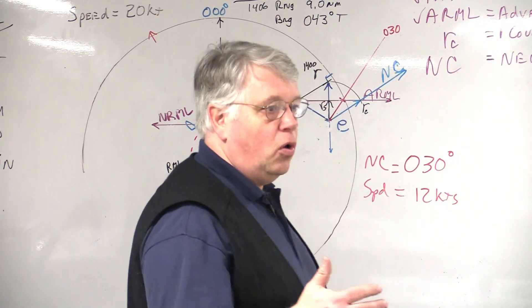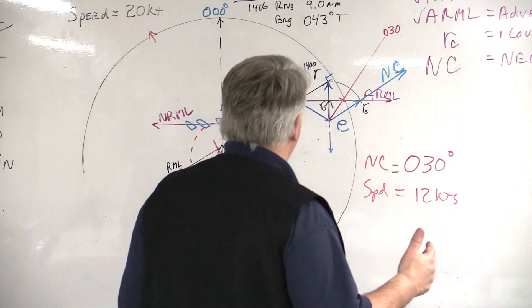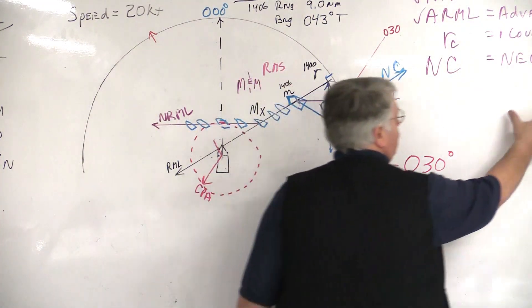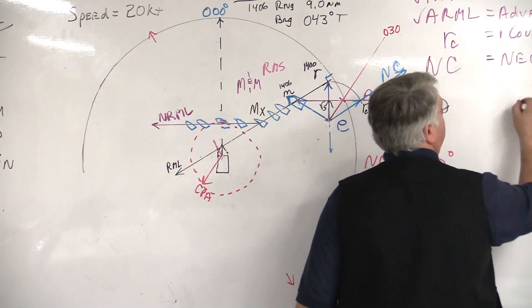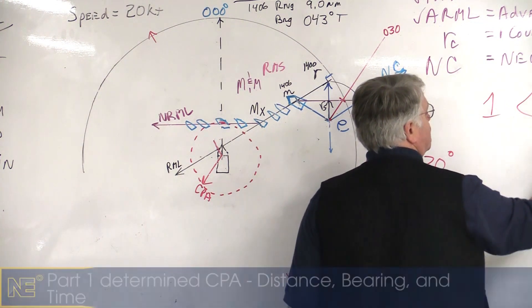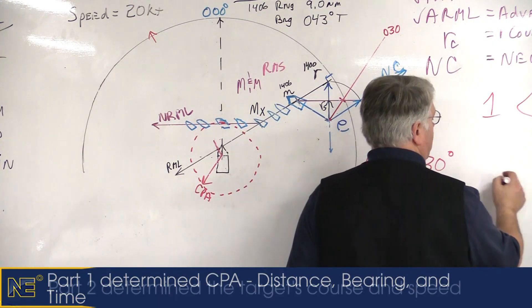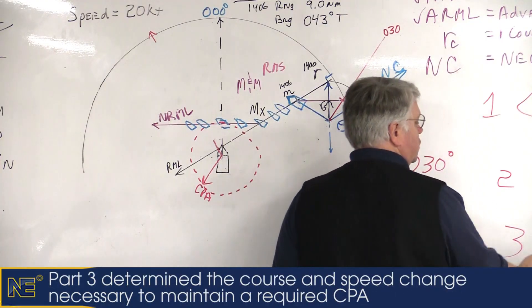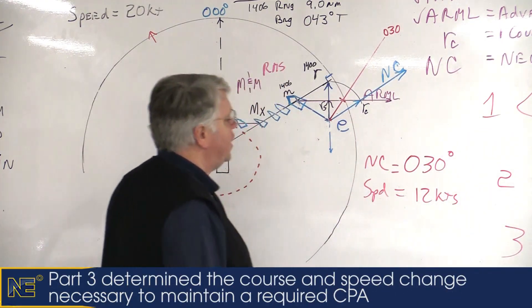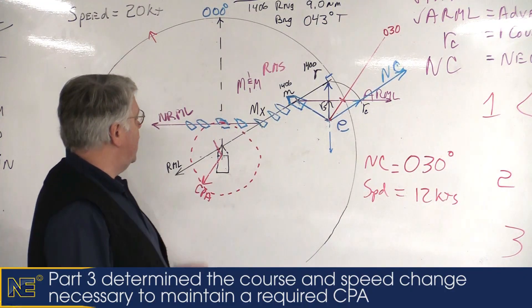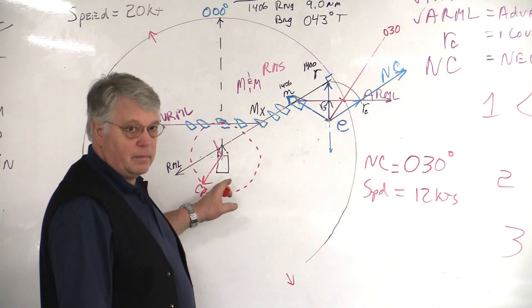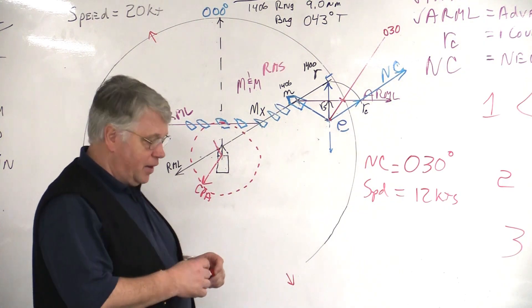This sort of completes the whole event here where we have gone through parts one, two and three. We've figured out the priority of CPA distance bearing and time. Then we did part two where we figured out his course and speed. And then we've done part three, which we figured out what course we have to change to in order to maintain a required CPA. All right? Questions? Excellent. Let's practice some of these. Very good. Thank you.